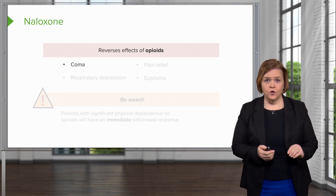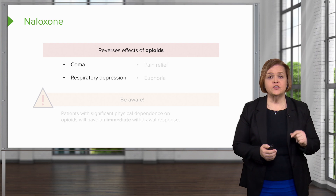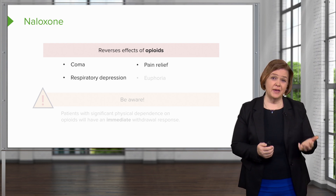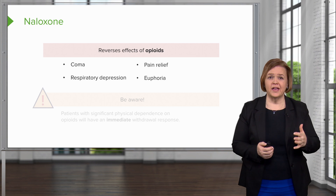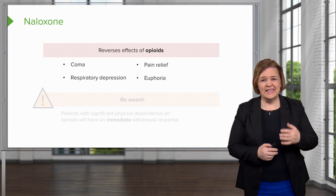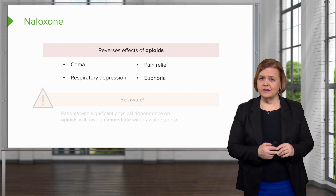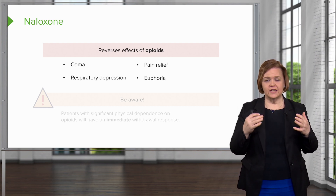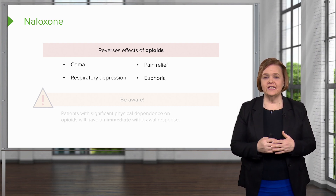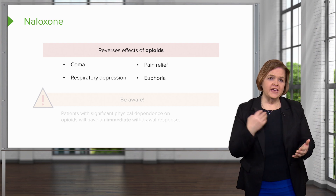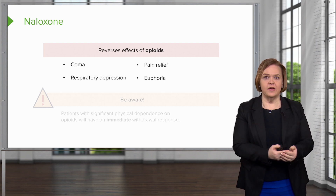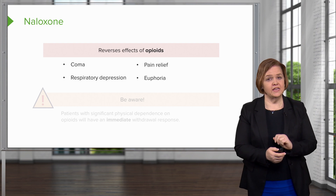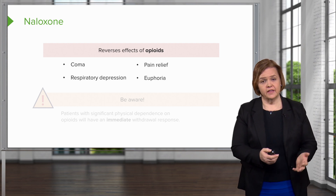Naloxone reverses the effects of the opioids because it's an antagonist. It's going to reverse the coma — they're going to wake up. It's going to reverse the respiratory depression, and it's going to reverse the pain relief and the euphoria. So when they wake up in the ER, they're not particularly happy. We hit them with the naloxone, they wake up, and we have saved their life.